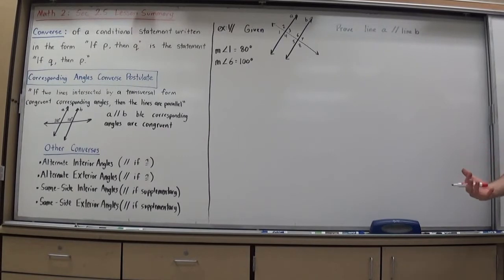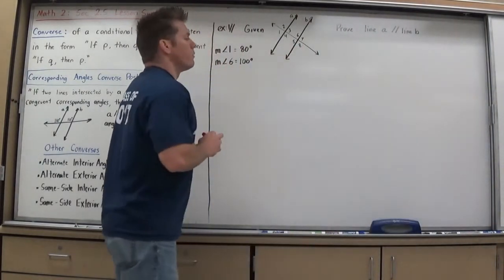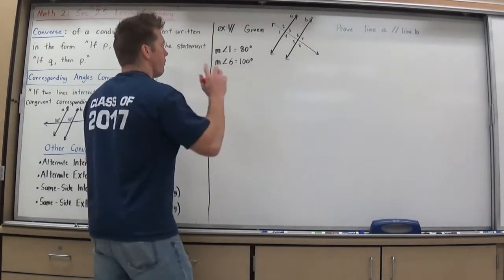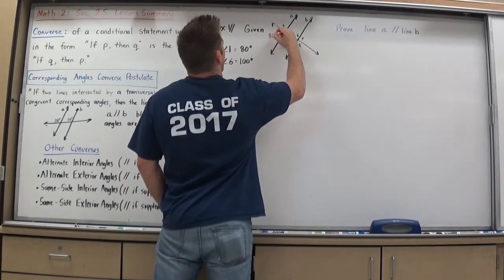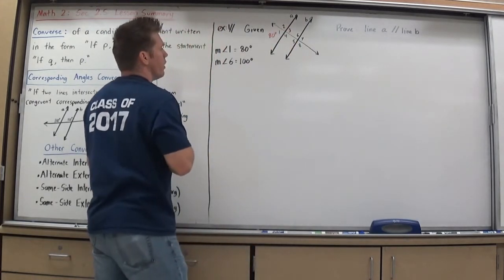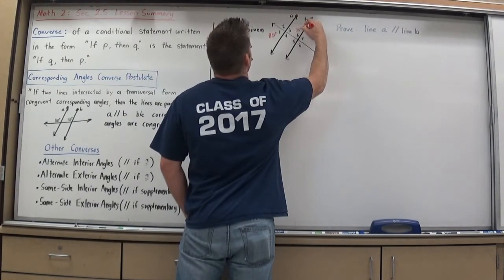I'm going to show you a paragraph or a flow proof. So I'm going to start by brainstorming and then I'll make my formal proof. So I'm always going to label as I go along, it's real important. So I know the measure of angle one is 80 degrees. I know the measure of angle six is 100 degrees.